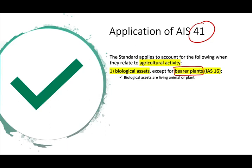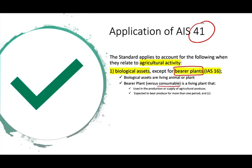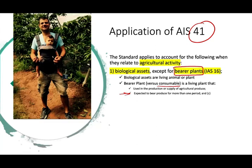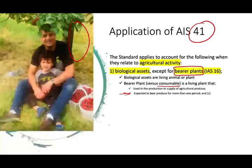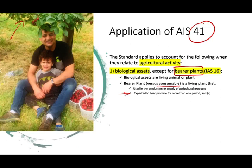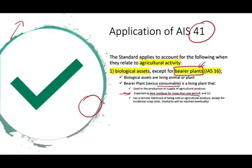Bearer plants versus consumable plants: a bearer plant is a living plant used in the production or supply of agricultural produce that is expected to bear produce for more than one period. Here's a photo of me and my son collecting cherries — this is the cherry tree. Notice two years later we are still collecting cherries from the same tree. This is a bearer plant; it was expected to bear produce for multiple periods and has a remote likelihood of being sold as agricultural produce except for incidental scrap sales.